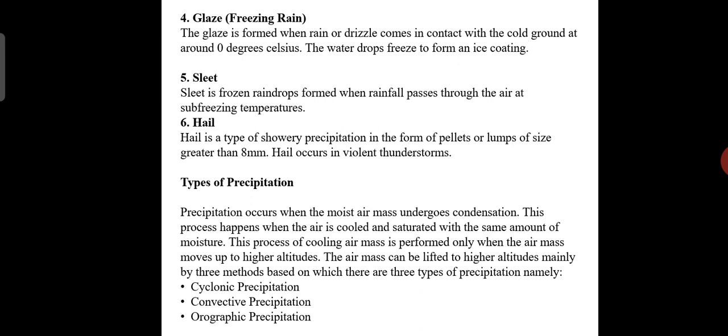These are a few forms of precipitation. Next, types of precipitation. Precipitation occurs when the moist air mass undergoes condensation. This process happens when the air is cooled and saturated with the same amount of moisture. This process of cooling air mass is performed only when the air mass moves up to higher altitudes.